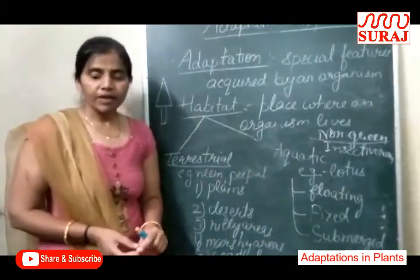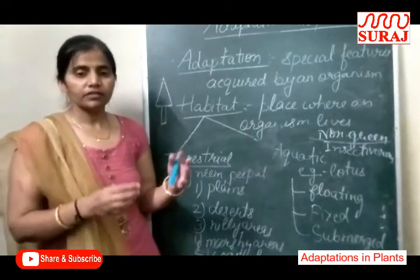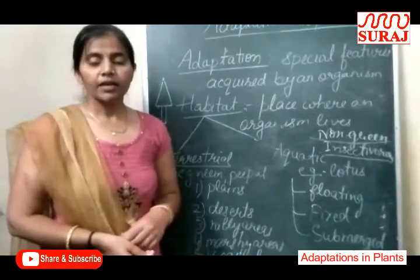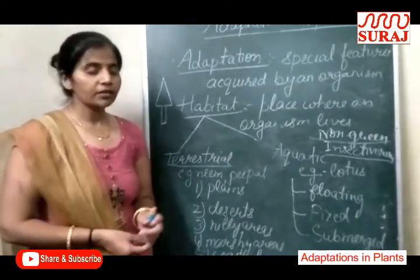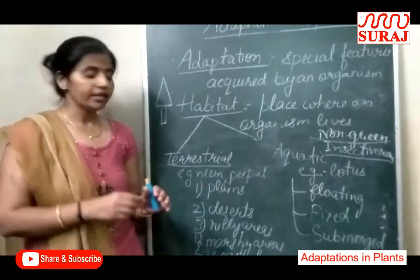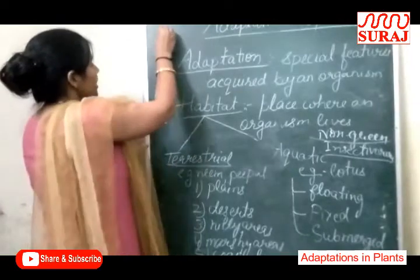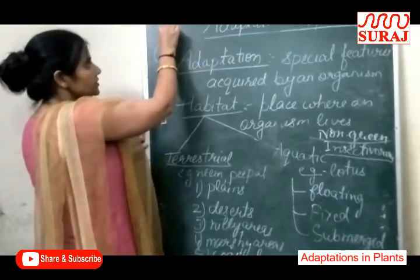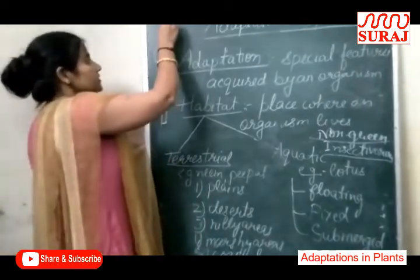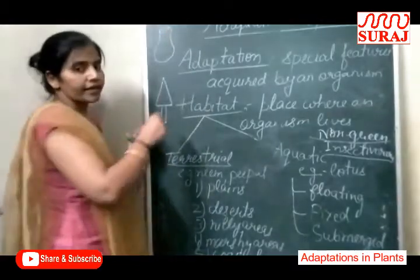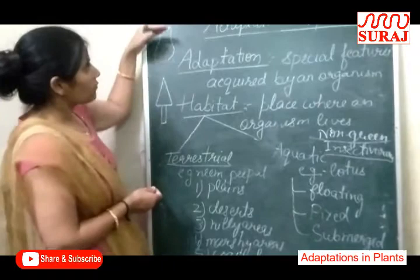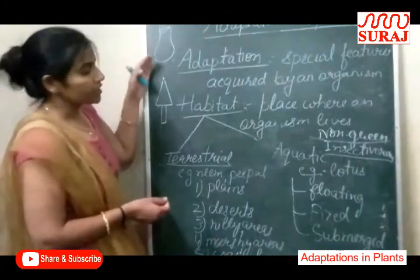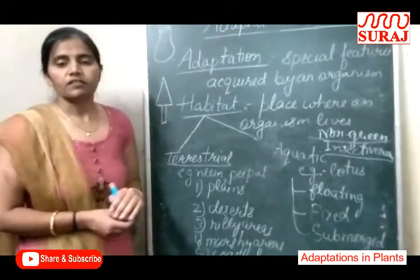Next are Insectivorous plants — that trap insects because their leaves are modified to trap insects. Examples: Pitcher Plant and Venus Fly Trap. In the Pitcher Plant, the leaf of the plant is modified just like a pitcher — ghade ki shape mein hoti hai. This is the lid of the leaf. When the insect sits on it, this lid covers the mouth of the pitcher and the insect gets trapped. Insect jab yahan pe baithta hai, to yah dhakkan cover ho jaata hai, aur insect iske andar trap ho jaata hai. Iske baad ye further digestion process karte hain aur apna nutrition is insect se obtain karte hain.